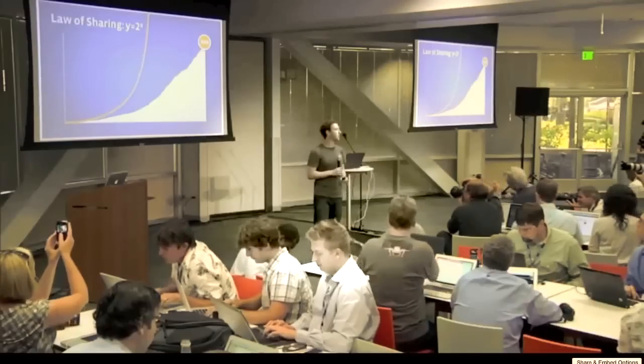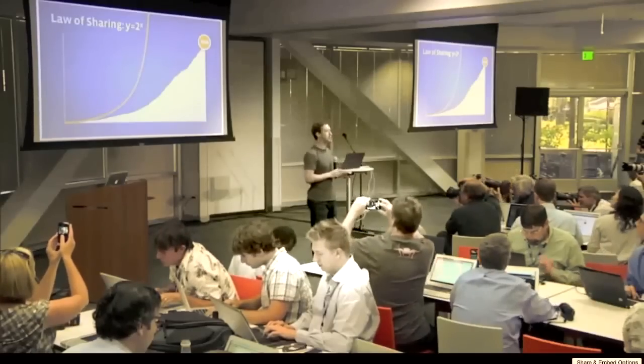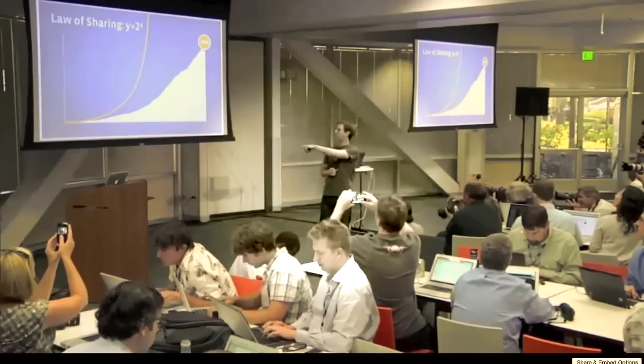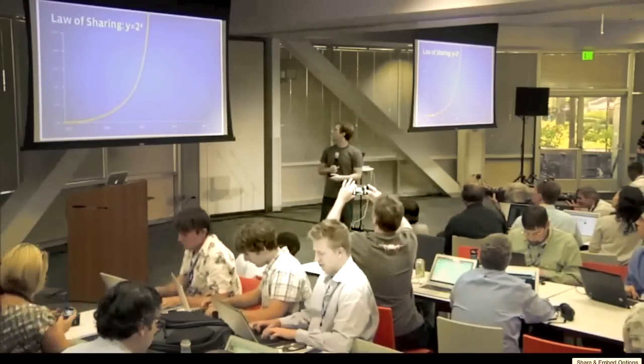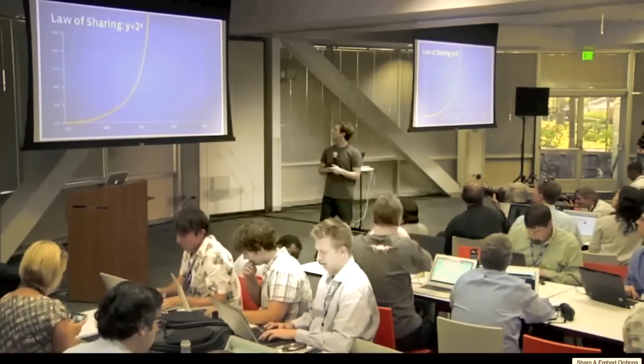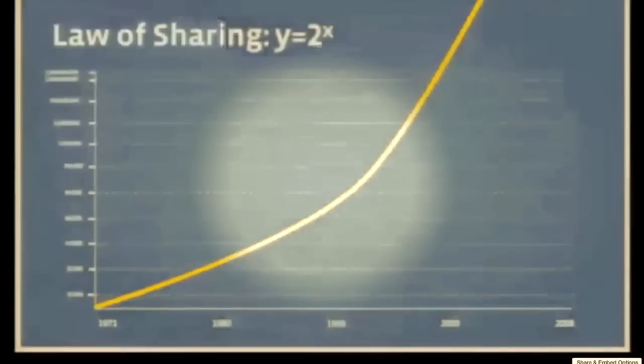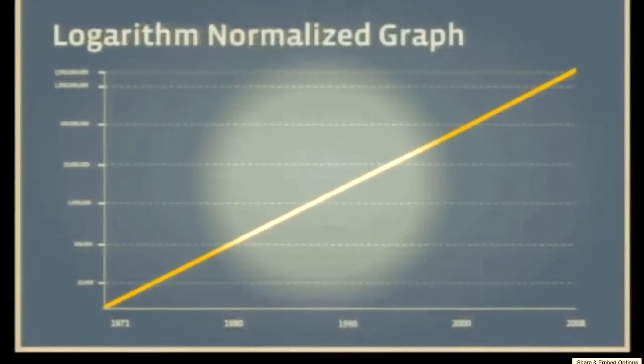Now, these exponential curves, because they grow so quickly, you don't tend to look at them like this, because they just go off the chart too quickly. So you tend to look at them in what we call a log normalized graph. That way, if you look at the y-axis here, it's skewed. So it's not going up linearly. This is kind of how people tend to look at these exponential graphs to plot out how progress is being made over time.